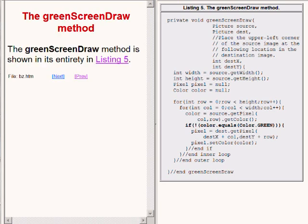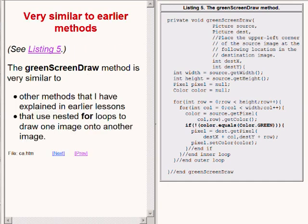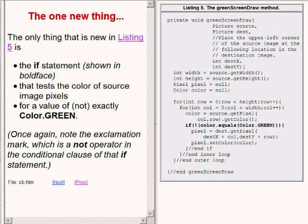The greenScreenDraw method is shown in its entirety on the right of your screen. This method is very similar to other methods that I have explained in earlier lessons that use nested for loops to draw one image onto another image. The only thing that is new in this method is the if statement shown in boldface on the right of your screen. This if statement tests the color of the source image pixel.